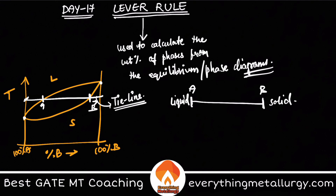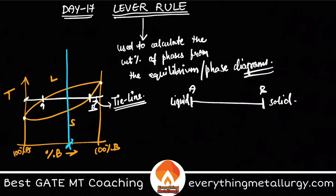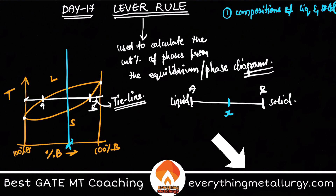Now let's say I have an alloy at some X percentage B fixed on the tie line. If you want to calculate, you can do two different things. Number one: you can calculate the concentration or compositions of liquid and solid — that is, how much of B is present in the liquid phase and how much percentage of B is present in the solid phase.